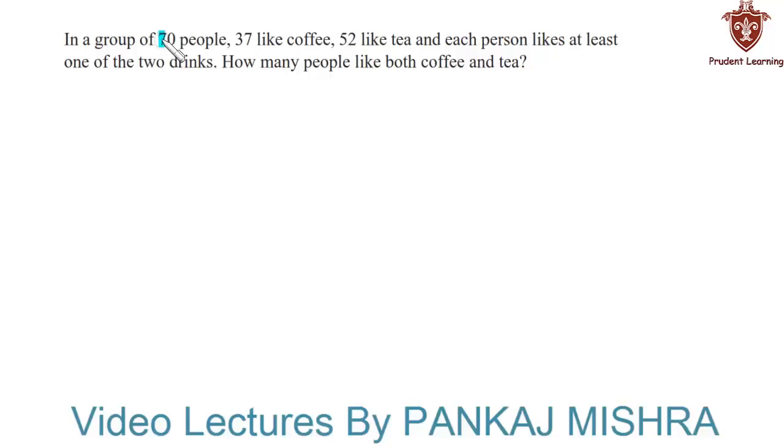In a group of 70 people, 37 like coffee, 52 like tea, and each person likes at least one of the two drinks. How many people like both coffee and tea? Let us see the solution for this problem.